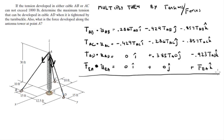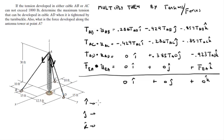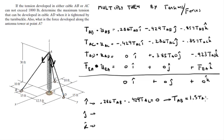Adding all these Cartesian vectors together and setting them equal to zero for equilibrium gives three scalar equations. From the i-component: 0.286·T_AB − 0.429·T_AC = 0. Solving gives T_AB = 1.5·T_AC, which immediately tells us that T_AB is larger than T_AC.